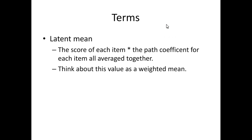A latent mean is a calculation of the score for each participant on their items times the path coefficient for each item. So the score they got on item 1 times the path coefficient for item 1, plus the score they got on item 2 times its path coefficient — that is a weighted mean. We don't tend to do those very often. We tend to focus on subtotals or average factor scores, but in this section we'll get into weighted scores, which are often more useful than total scores.